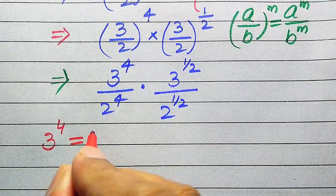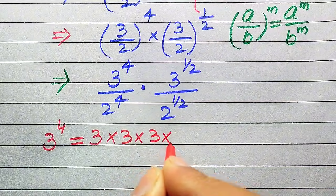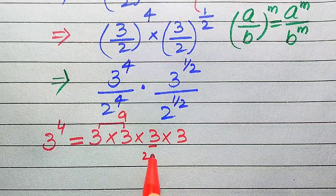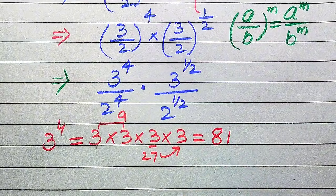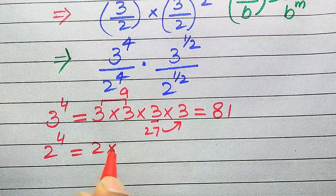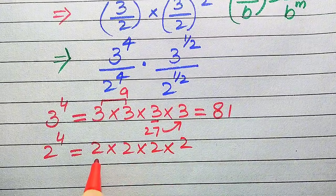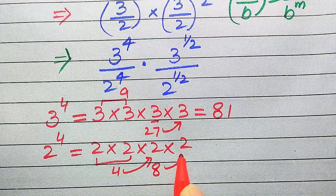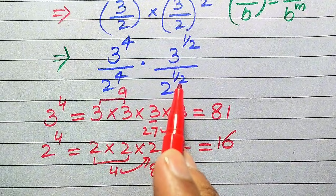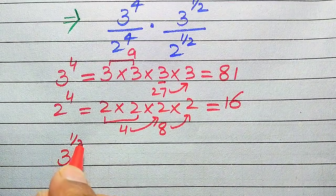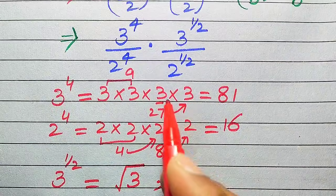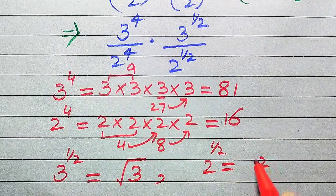After applying the law, we get (3 to the power of 4) divided by (2 to the power of 4), multiplied by (3 to the power of 1 over 2) divided by (2 to the power of 1 over 2). We compute: 3 to the power of 4 — multiplying 3 four times: 3×3=9, 9×3=27, 27×3=81. So 3 to the power of 4 equals 81. Similarly, 2 to the power of 4: 2×2=4, 4×2=8, 8×2=16, so 2 to the power of 4 equals 16. Also, 3 to the power of 1/2 is √3 and 2 to the power of 1/2 is √2.